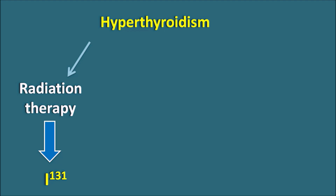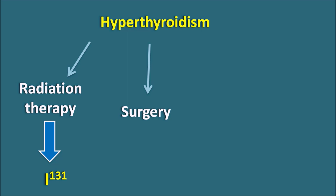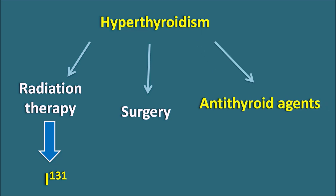Otherwise, the thyroid gland can be surgically removed so that we can prevent the excessive release of thyroid hormones. Finally, we can use antithyroid agents, which are going to inhibit the synthesis of thyroid hormones within the thyroid follicles. So in this video, let us discuss the antithyroid agents.